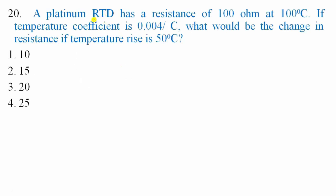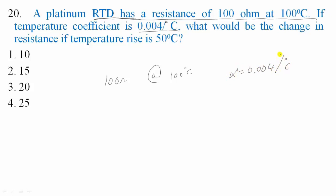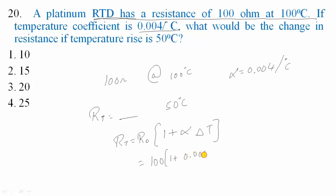Question 20: A platinum RTD has a resistance of 100 Ω at 100°C. The temperature coefficient α = 0.004/°C. What is the change in resistance for a further temperature rise to 150°C? Using Rt = R₀(1 + α·ΔT) = 100×(1 + 0.004×50) = 100×1.2 = 120 Ω. The change in resistance is 20 Ω. Option 3 is correct.